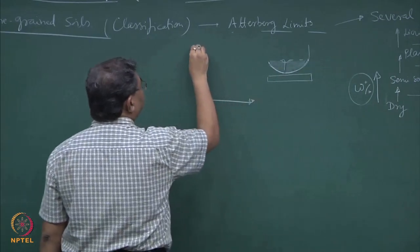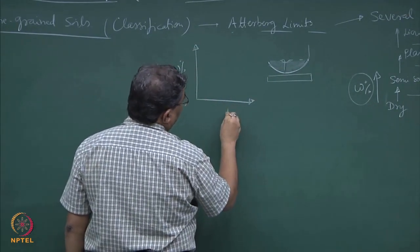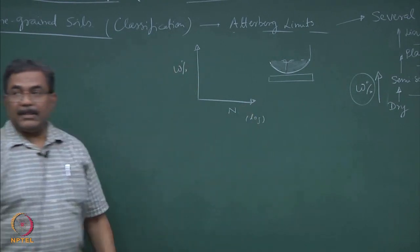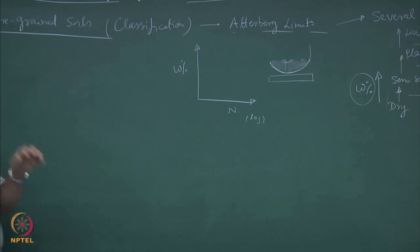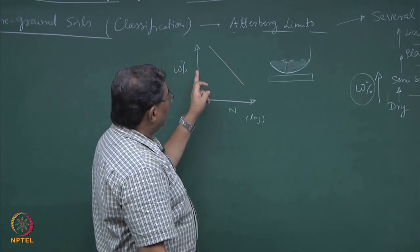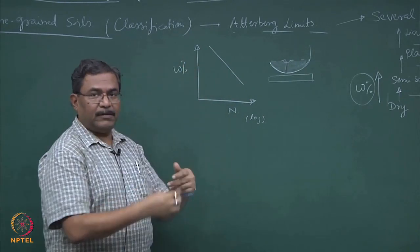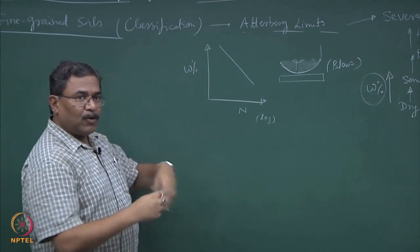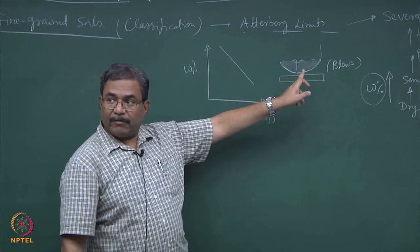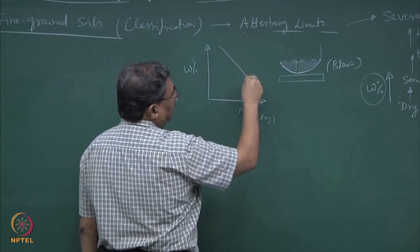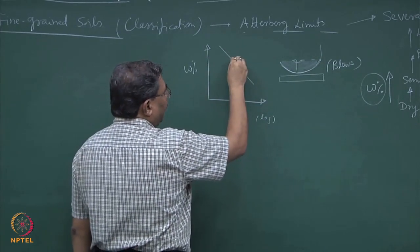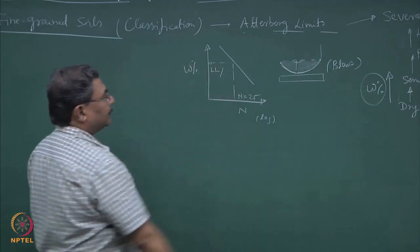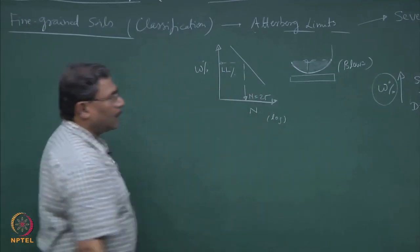What we normally do is plot percentage moisture as a function of n, where n is on the log scale. The logic says: the more the moisture, the less number of blows you require — we call this blows or tamps. More the moisture, fewer blows are required to close the groove which you have created. However, as you keep on increasing the number of blows and moisture content decreases, at n equal to 25, the moisture content corresponds to the liquid limit.